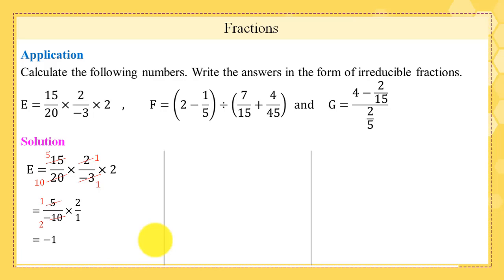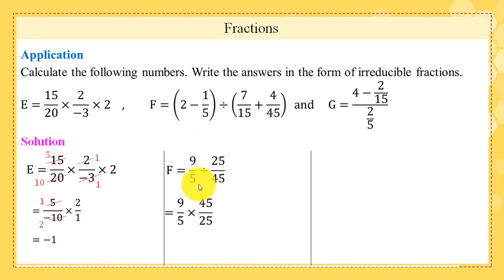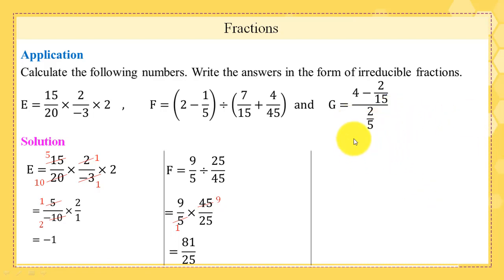Now, f = (2 − 1/5) ÷ (7/15 + 4/45). We work inside the parentheses: 2 − 1/5 = 9/5 and 7/15 + 4/45 = 25/45 = 5/9. So f = (9/5) ÷ (5/9) = (9/5) × (9/5) = 81/25.